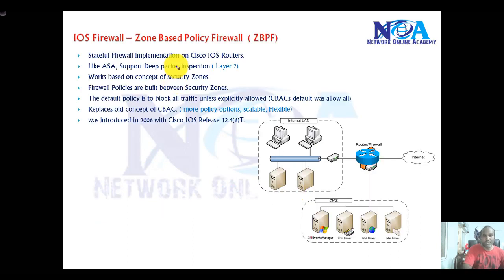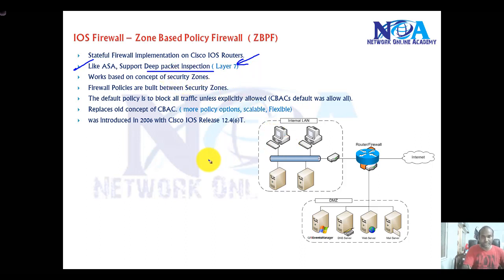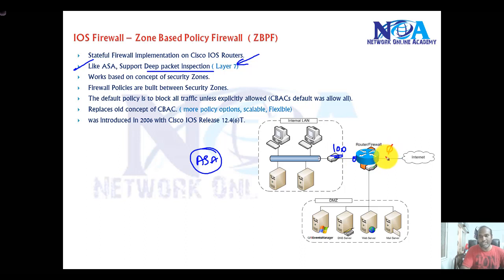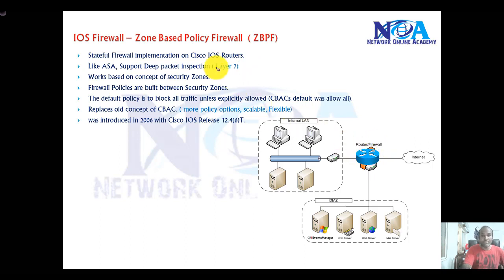The Zone-Based Firewall is similar to ASA in that it supports deep packet inspection. However, unlike ASA, it does not use security levels. In ASA, you define levels such as 100 on the trusted LAN interface and 0 on the internet-facing interface, with traffic allowed from higher to lower and denied from lower to higher by default.